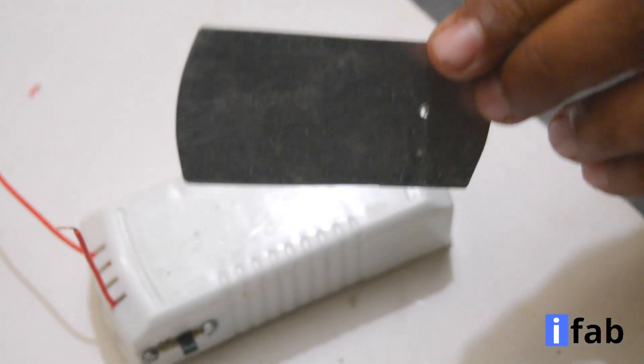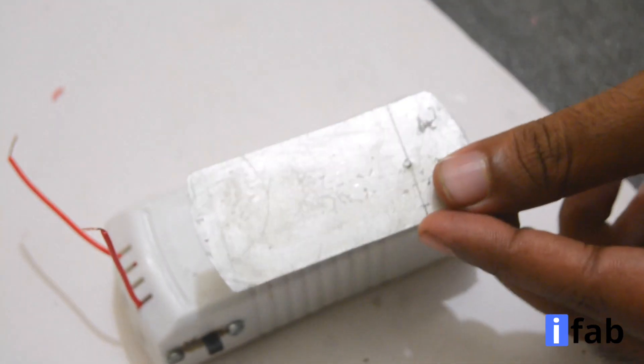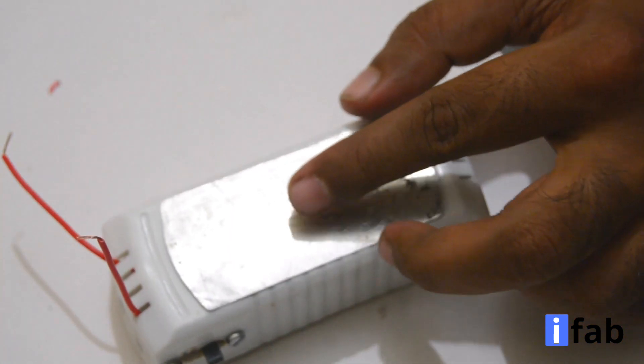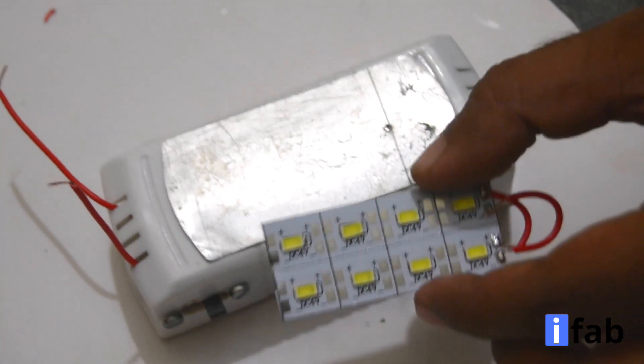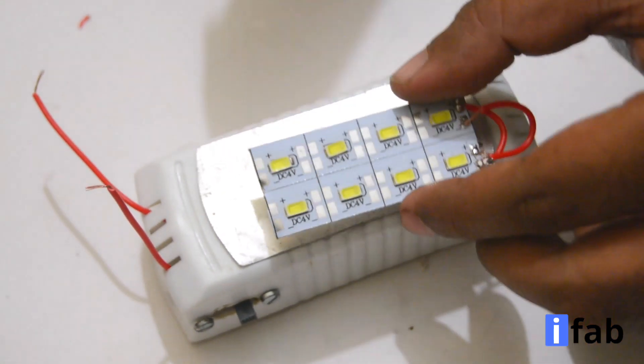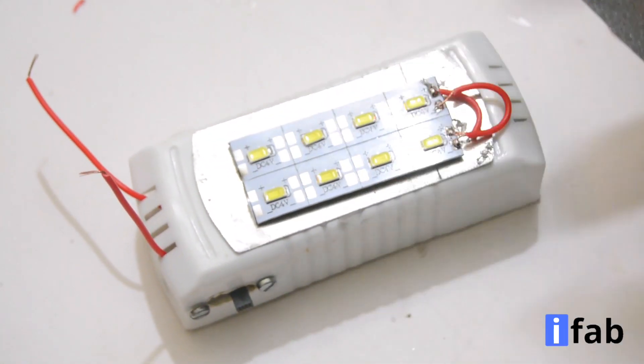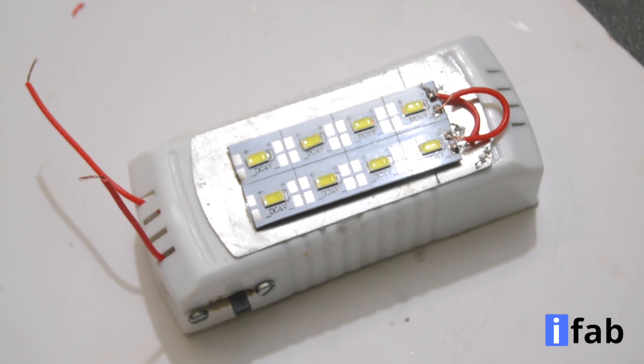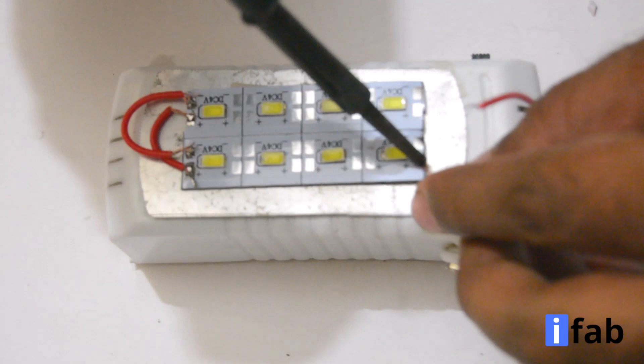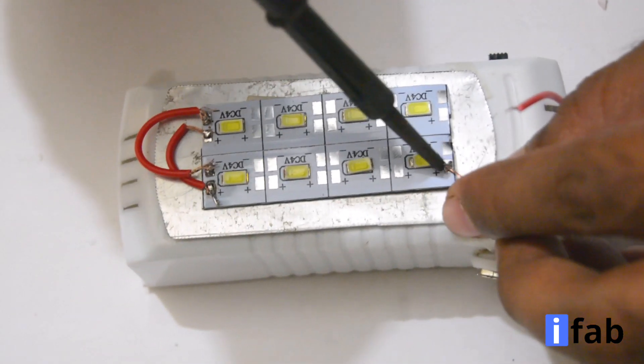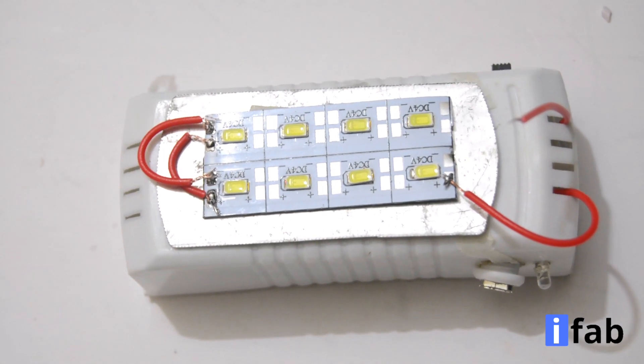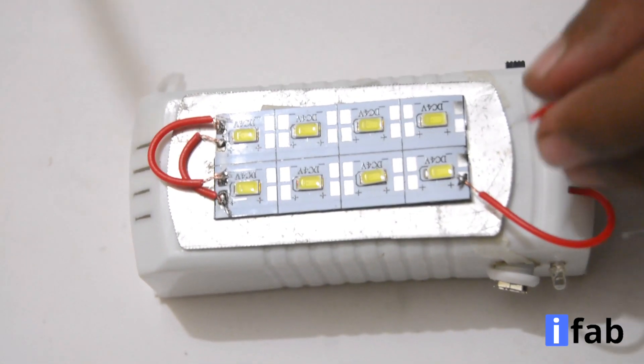Now take an aluminum sheet and fix it over the case, it will act as a heatsink. You can use a glue gun to fix it and now stick the LED strip over the sheet. Now connect the lead wires from the electronic choke case and then connect it with the positive and negative terminal of the LED strip respectively.